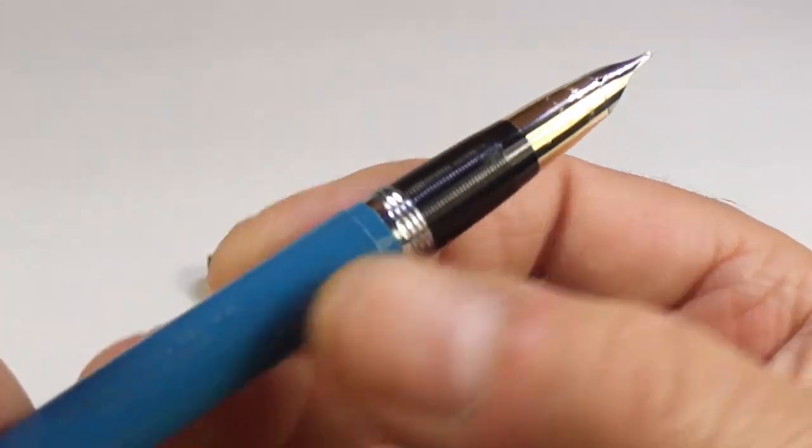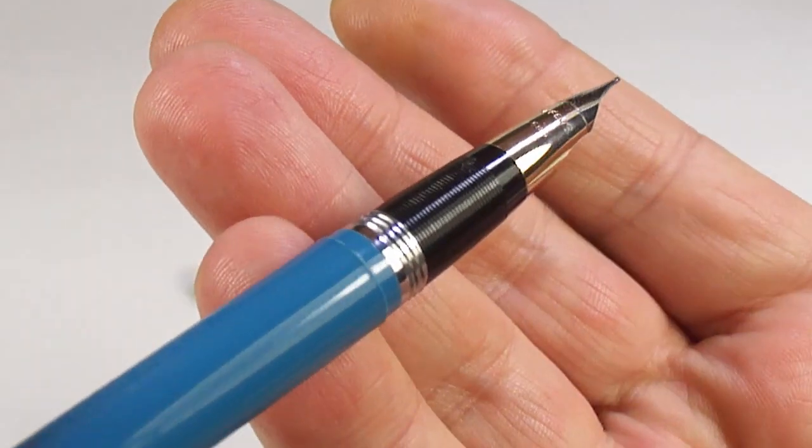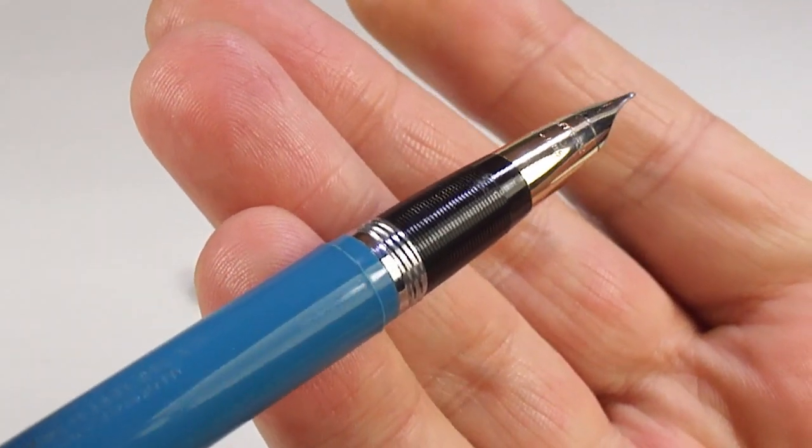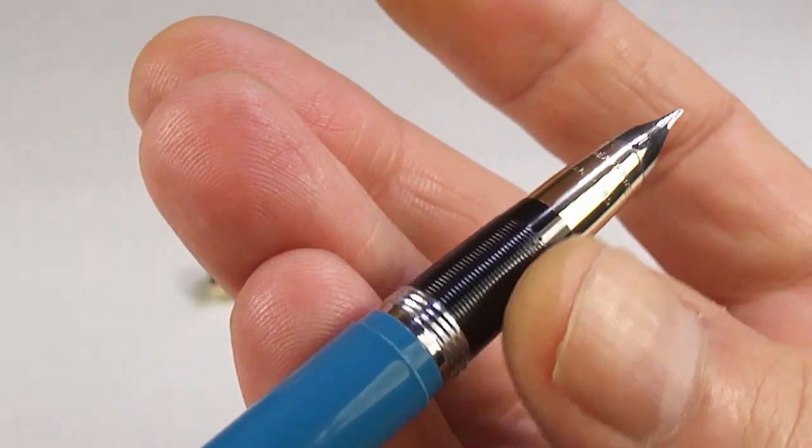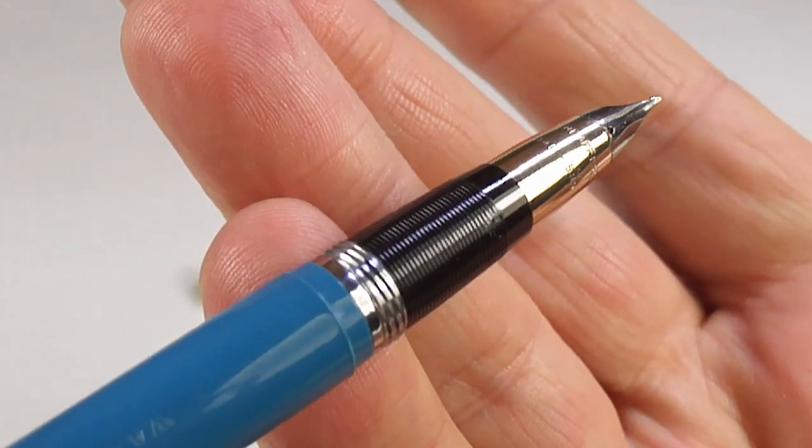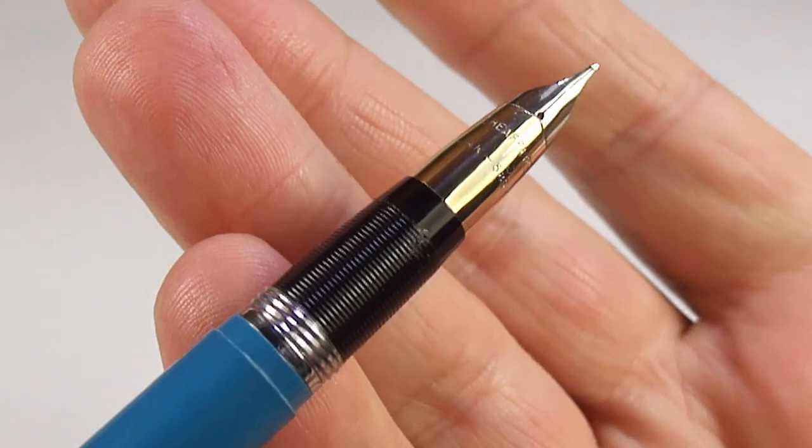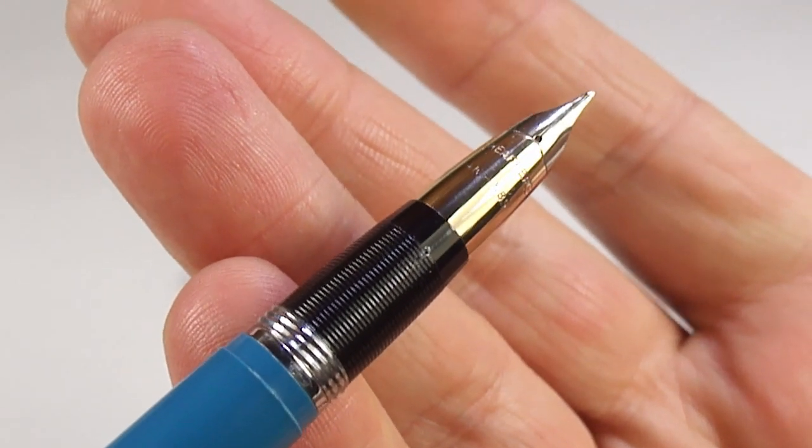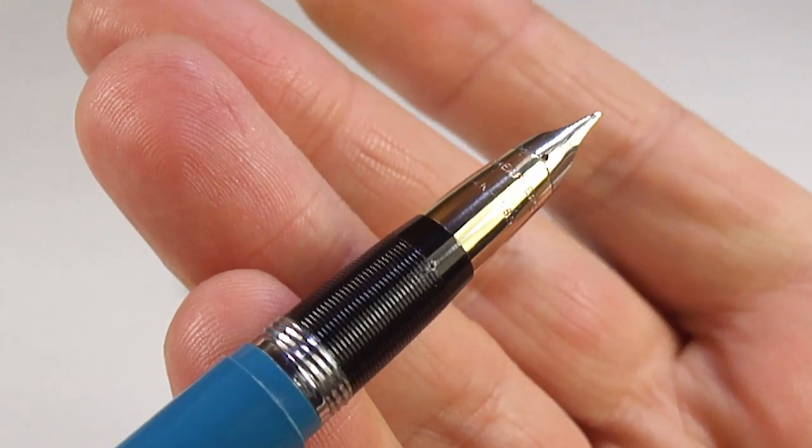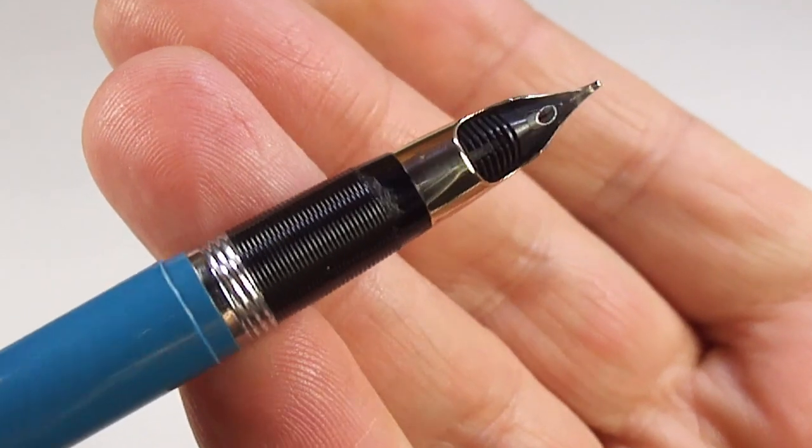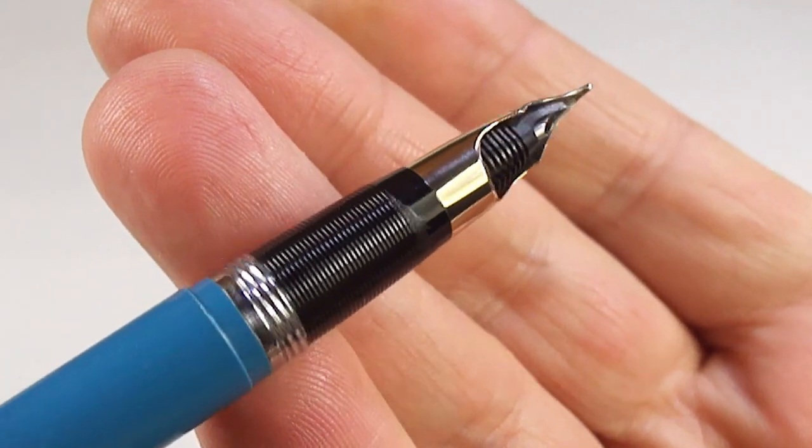Let's take you up to the section. You can see, just below the section, we've got the metal thread. We've got this slightly ribbed section there. And we've got the very recognizable Triumph nib. It's a sort of what we term as a wraparound nib.